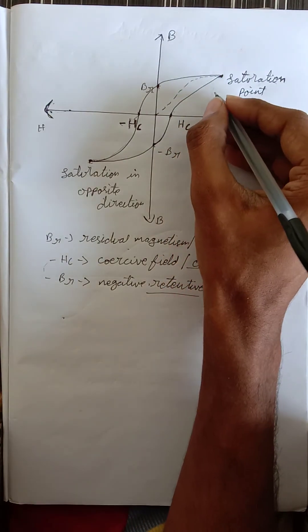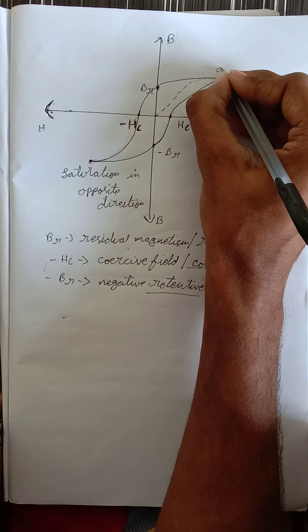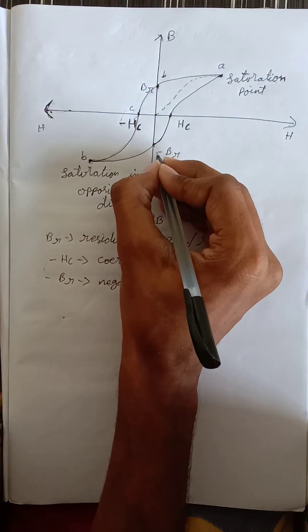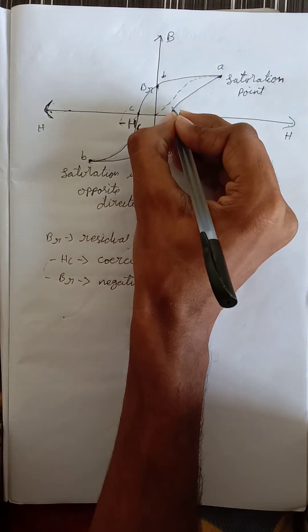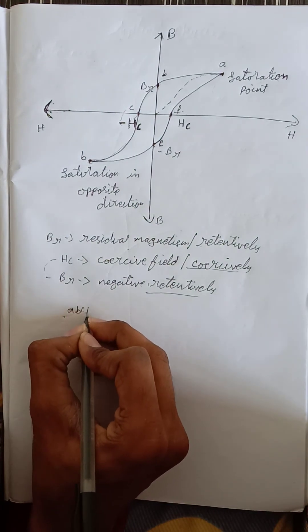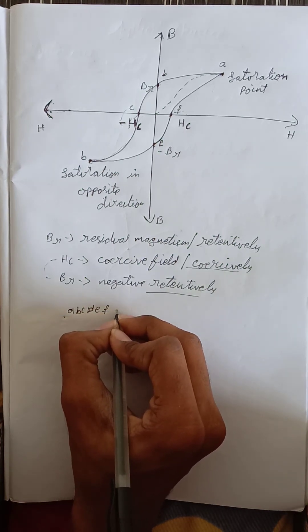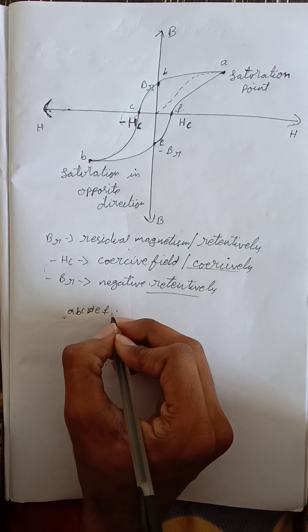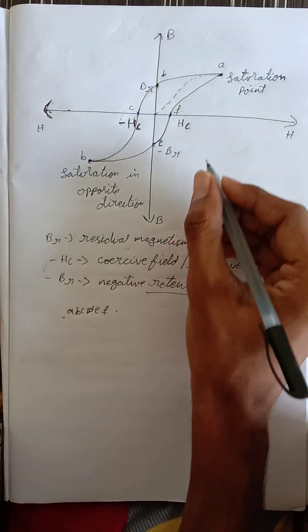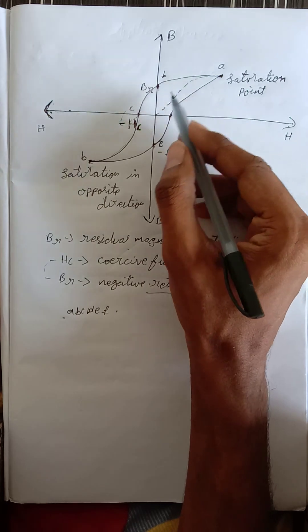I am labeling the points of this curve. The initial path starts at point A, followed by B, C, D, E, and F. The curve or loop A-B-C-D-E-F creates a closed loop, and the area enclosed within this loop A-B-C-D-E-F is called the hysteresis loss. When we repeat the process of increasing and decreasing the magnetic field, the same loop is created again.